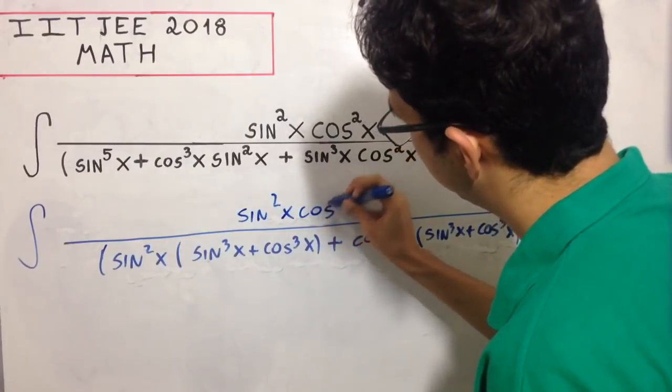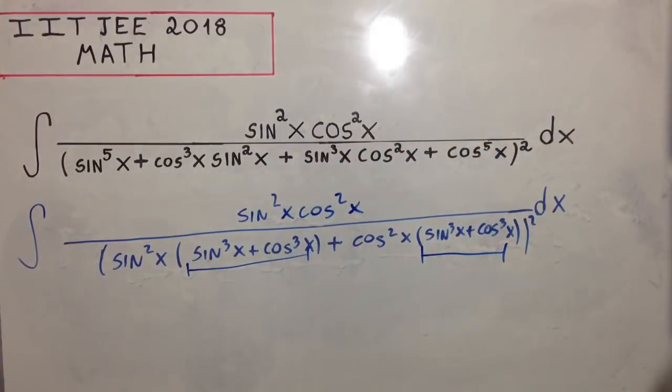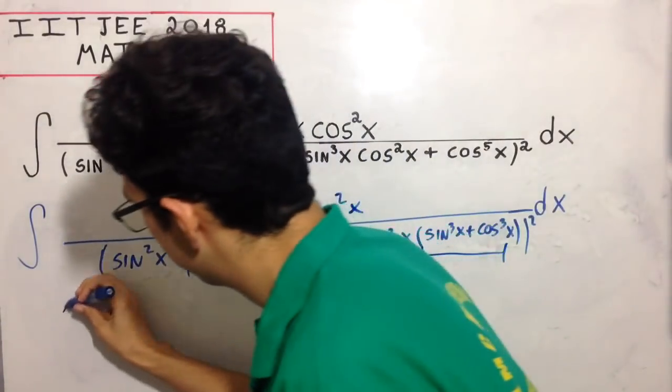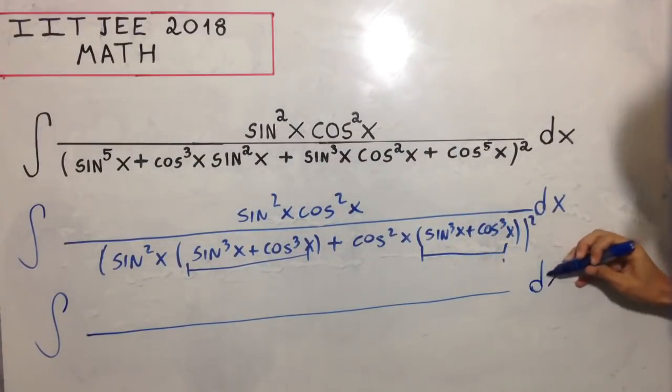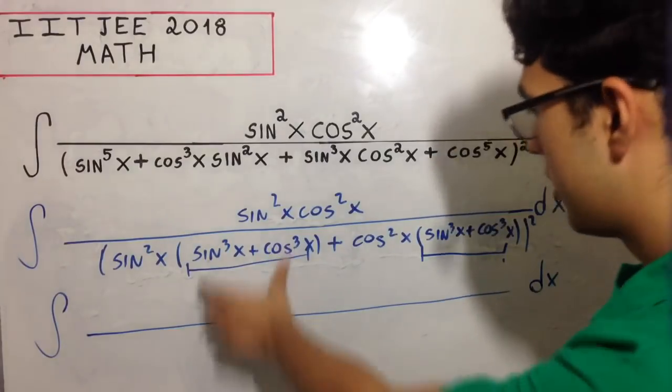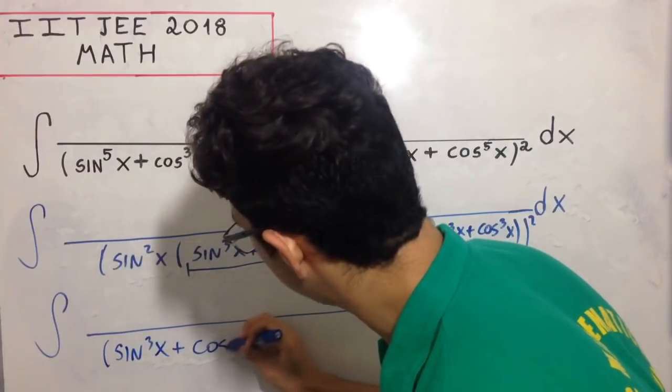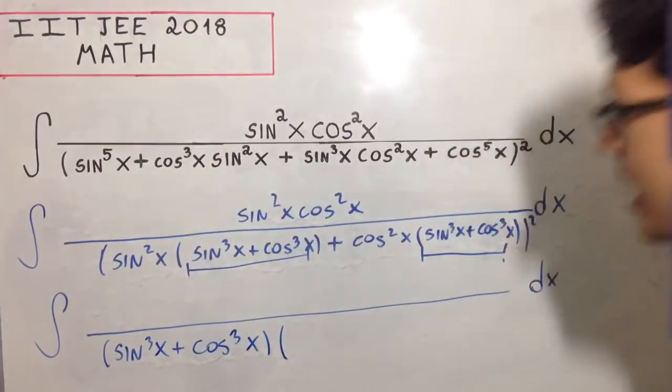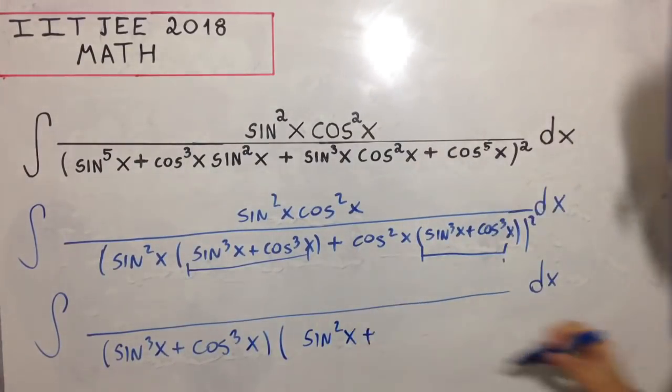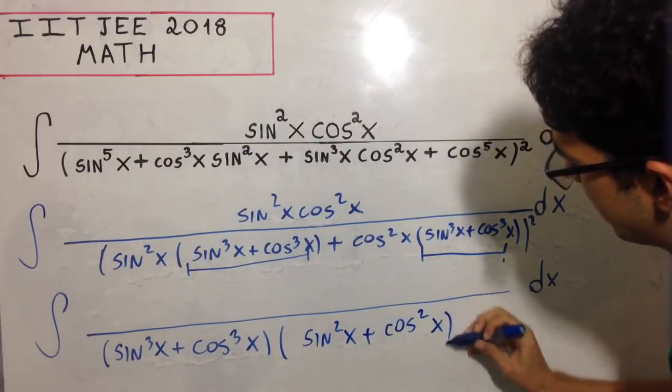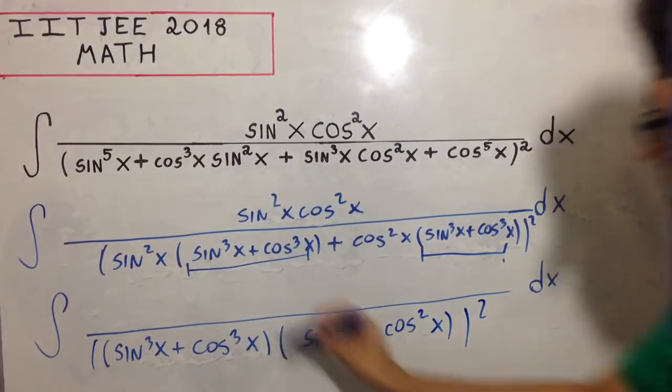Let's rewrite this. The integral of sin²x cos²x dx divided by (sin³x + cos³x) times (sin²x + cos²x), all squared.